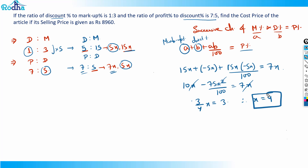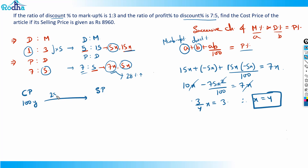Now that x = 4, we need to find the cost price. The selling price is ₹8960. Let cost price = 100y. The profit percentage is 7x = 7 × 4 = 28%. So selling price = 100y × (128/100) = 128y. Setting 128y = 8960.